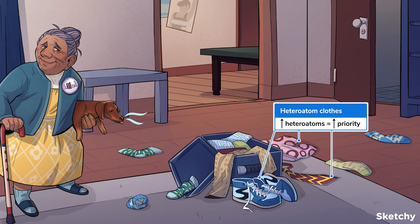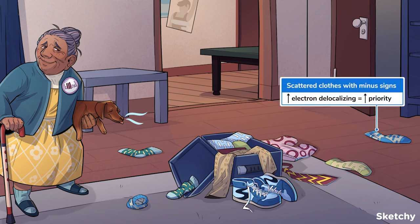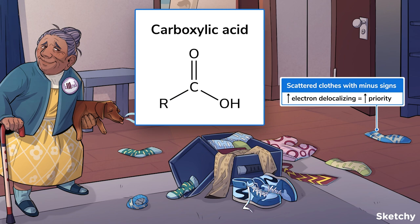One rule is that more heteroatoms in the functional group means higher priority. And it looks like someone's clothes with heteroatom letters on them — like O's, N's, and S's — have ended up in a mess on the floor. That's a high-priority cleanup job. Another general priority rule relates to electron density. The more delocalized the electron density, the higher the priority. For example, carboxylic acids, in which electrons can easily delocalize and resonate around those three carbon-oxygen bonds, have super high priority — actually the highest priority of all functional groups. This high-priority mess of minus-sign clothes is even more scattered around the floor, reminding us that free-moving, delocalized electrons also lead to high-priority functional groups.